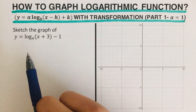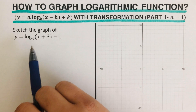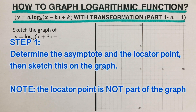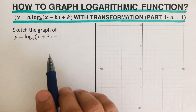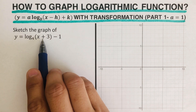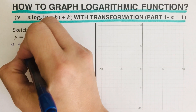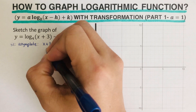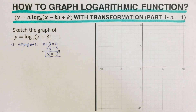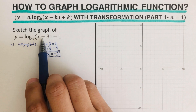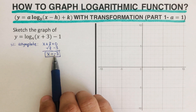Let's jump into this example. The first step is to determine the asymptote and the locator point and sketch them on the graph. The locator point is not part of the graph. To determine the asymptote, we set the expression inside the parentheses equal to zero and solve for x. So the asymptote is x equals negative three.